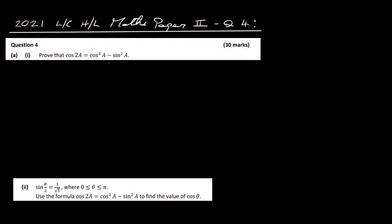Okay, so let's have a look at 2021 Leaving Cert Higher Level Maths Paper 2, question 4. In this question, in part A1, we have to prove that cos 2a is equal to cos squared a minus sine squared a.